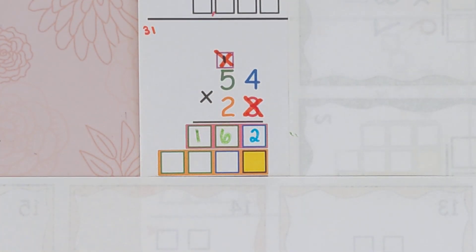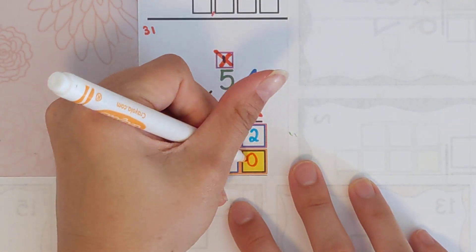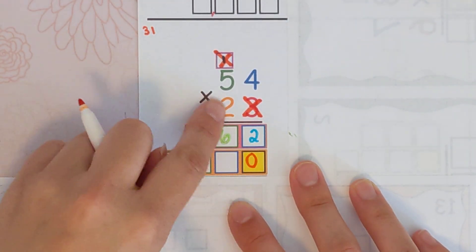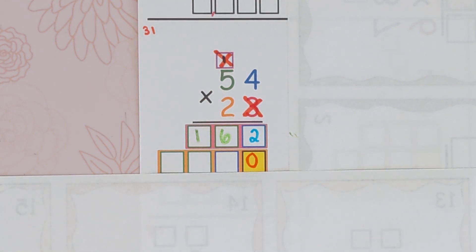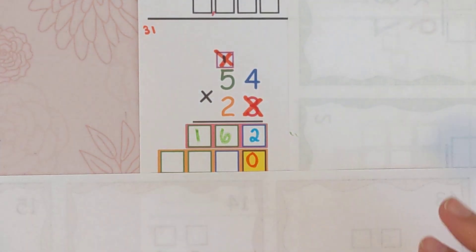What goes in the yellow box? And why? Why are we putting a zero there? Because this two is a 20. Okay, now we're going to do the same thing.